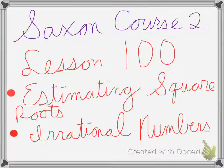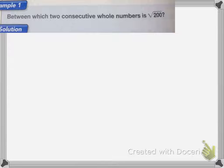Saxon Course 2 Lesson 100 is on estimating square roots and irrational numbers. So here it wants to know between which two consecutive whole numbers is the square root of 200.